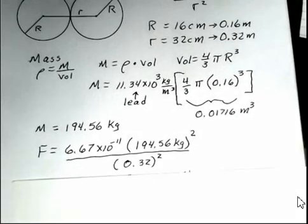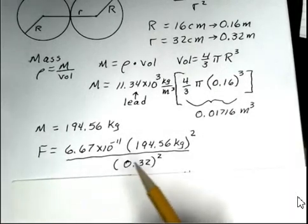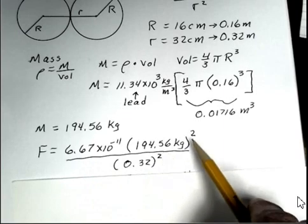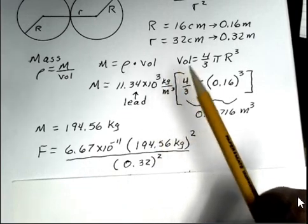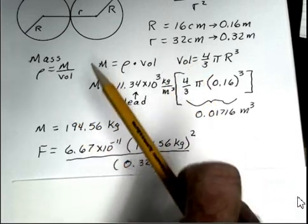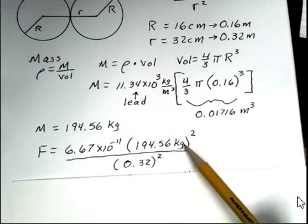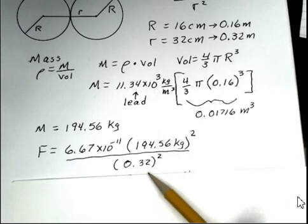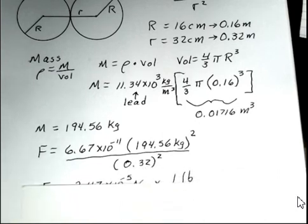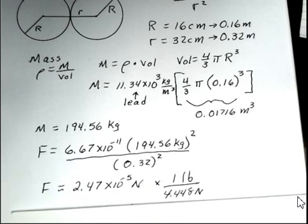Using that now to calculate the force, the constant of gravitation, the mass is squared because the two masses are identical. We have m1 times m2. A shortcut of that is just to square the one mass. And then we're dividing by the distance between the centers squared, 0.32 meters. So again, pause. Use your calculator. I believe you'll come up with 2.47 times 10 to the minus 5 newtons.